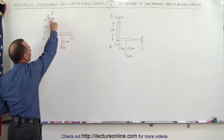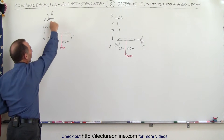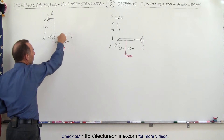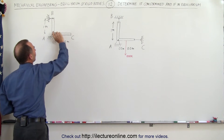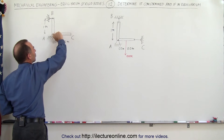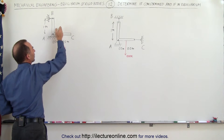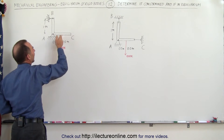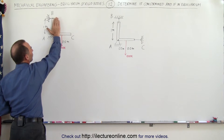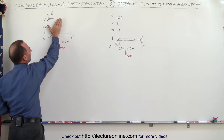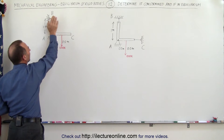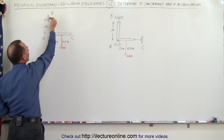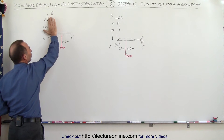If this is a solid structure and we're pulling on it here, this would cause a rotational force or movement about this particular point, causing the whole thing to rotate. But this short cable is preventing it from rotating — it's pulling in the opposite direction.